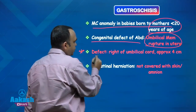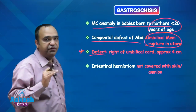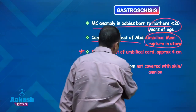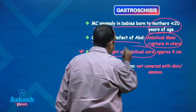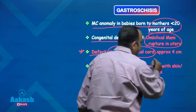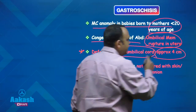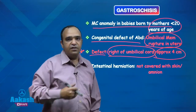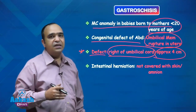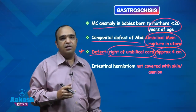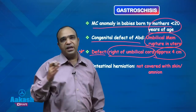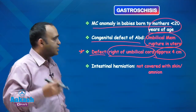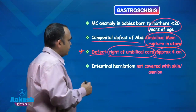The placement of the defect in the abdomen is very important. It is usually lateral, on the right side of the umbilical cord, and approximately 4 centimeters or less. In omphalocele, the defect is central in the abdomen and usually more than 4 centimeters. That is a key difference between gastroschisis and omphalocele.